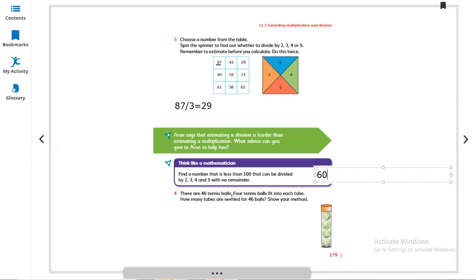There are 46 tennis balls. 4 tennis balls fit into each tube. How many tubes are needed for 46 balls? Very easy, divide it with 4. 46 divided by 4 to find the answer. In the table of 4: 4 multiply by 10 is 40, 4 multiply by 11 is 44. No, it's not coming. So 4 multiply by 11 is 44, and we have 46. So there is a reminder of 2. After 44, 45, 46, we have 2 remainder. So it means he needs 11, or you can say 12 tubes are needed for 46 balls.